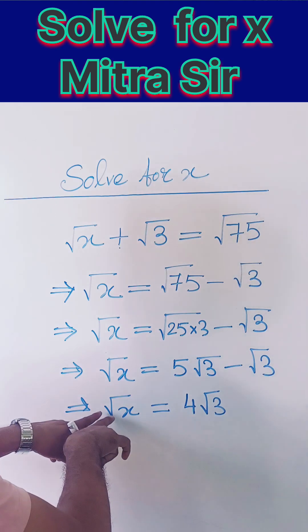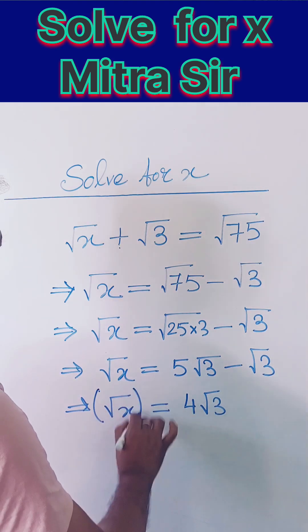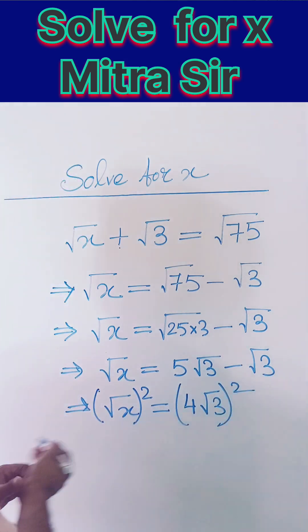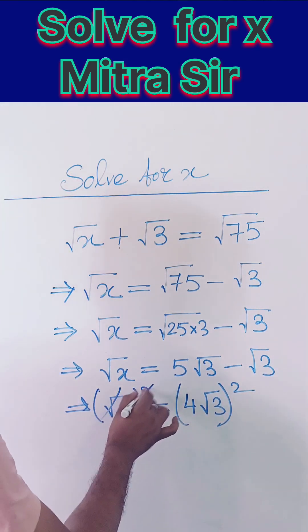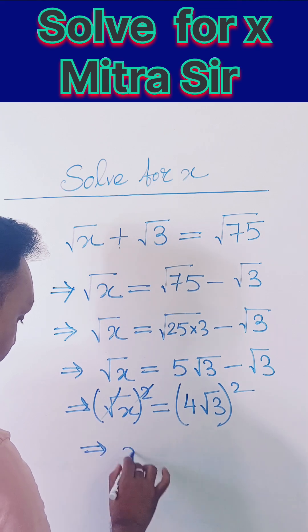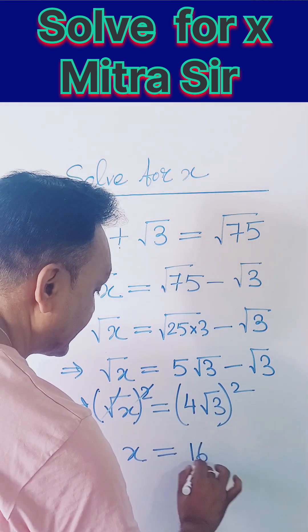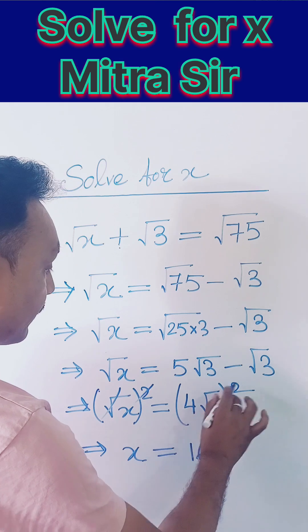Now I want to remove the square root, so we have to take the square on both sides. If we square both sides, this square root and the 2 will cancel, giving you only x. And here 4 squared is 16.